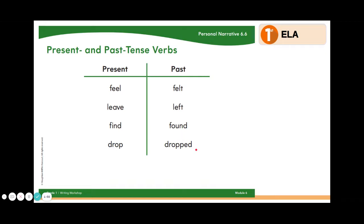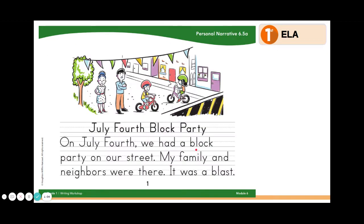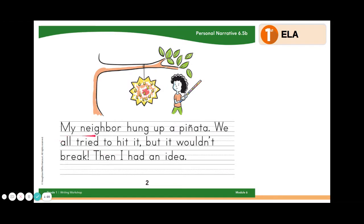Let's revisit the model sentence for our personal narrative — July 4th block party. On July 4th, we had a block party on our street. My family and neighbors were there. It was a blast. My neighbor hung up a piñata. We all tried to hit it, but it wouldn't break. Then I had an idea.